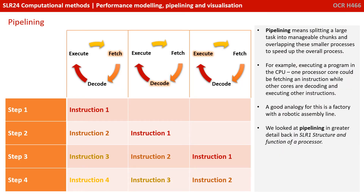Pipelining means splitting a large task into manageable chunks and overlapping these smaller processes to speed up the overall process. For example, executing a program in the CPU, we could have one processor core fetching an instruction, while other cores are decoding and executing instructions.